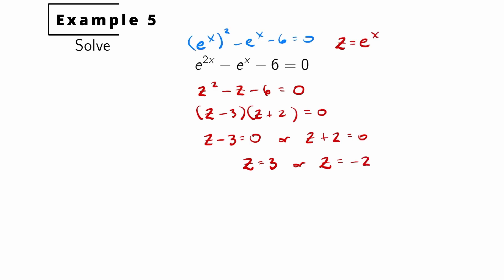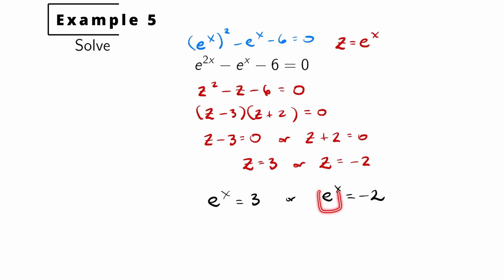Since Z is E to the X, we get two equations: E to the X equals 3 or E to the X equals negative 2. E to the X can never equal a negative number — E is Euler's number, approximately 2.7, and raising a positive number to any exponent never yields a negative result. So E to the X equals negative 2 is impossible. We must have E to the X equals 3. Taking the natural log of both sides, the natural log of E to the X gives X, so X equals the natural log of 3. That's our only solution.